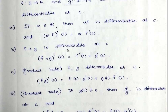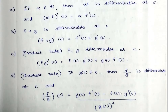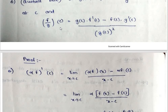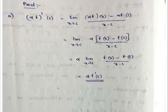Then: (f + g)'(c) = f'(c) + g'(c); (f - g)'(c) = f'(c) - g'(c); (f × g)'(c) = f(c) × g'(c) + g(c) × f'(c) — the product rule. For the quotient rule, provided g(c) is not equal to zero, f/g is differentiable at c, and (f/g)'(c) = [g(c) × f'(c) - f(c) × g'(c)] divided by [g(c)]².